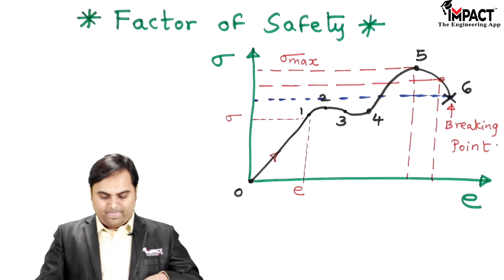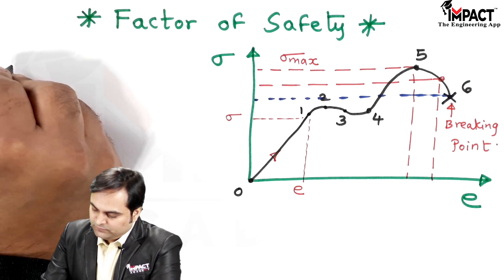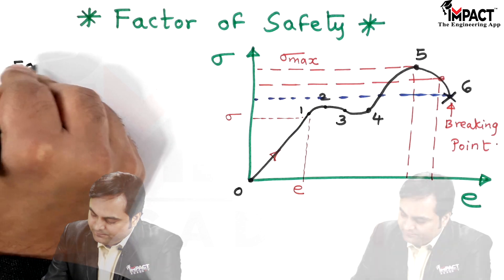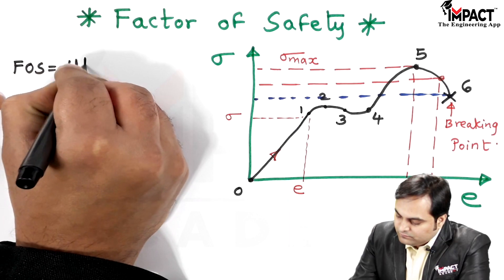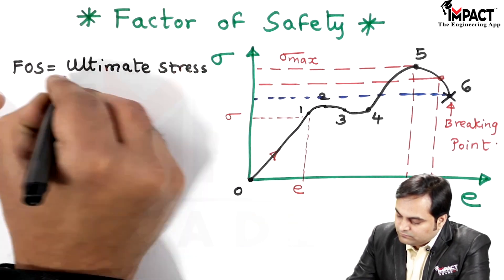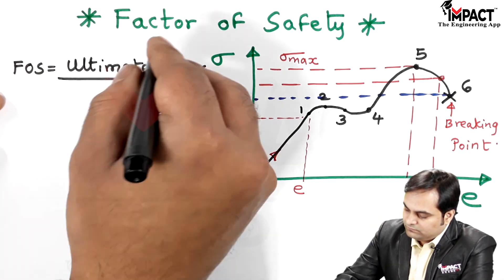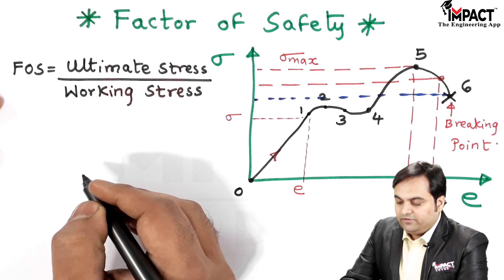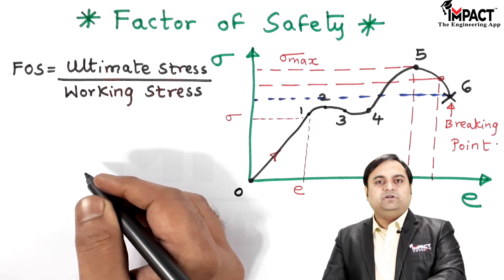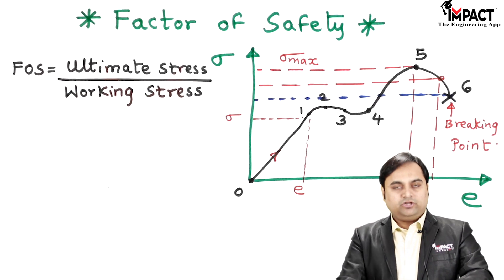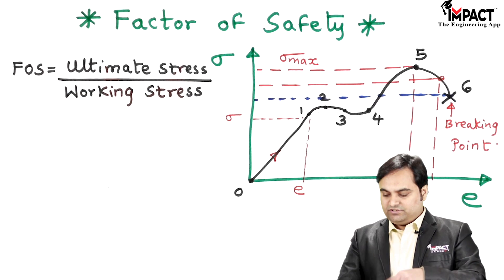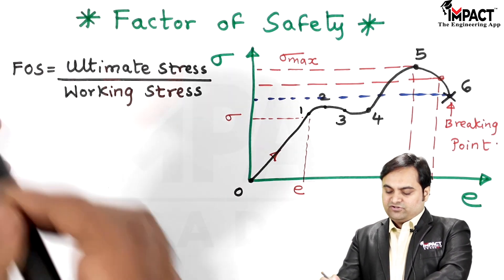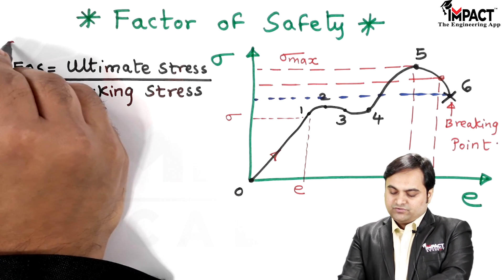The factor of safety is denoted as FOS. It is defined as the ultimate stress divided by the working stress — that is, factor of safety is the ratio of ultimate stress to working stress.